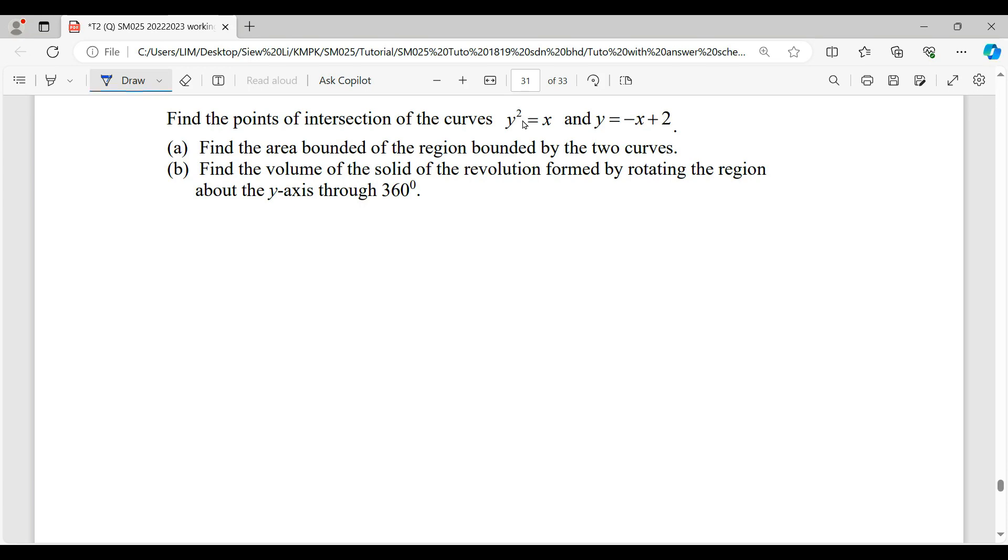So y² = x is a parabola. When it is in term of x, y to be squared means this parabola will be open to the left or open to the right. Since your x coefficient here is positive, means this parabola will be open to the right.